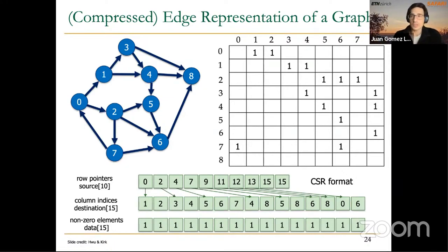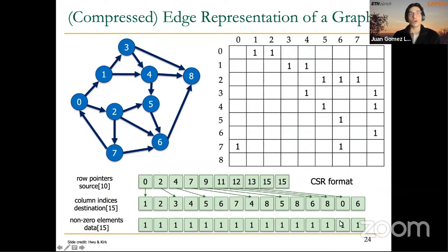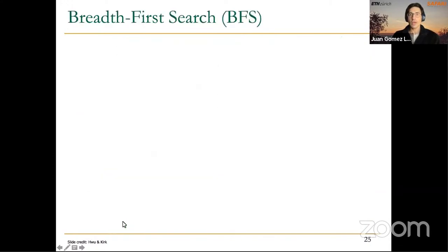But that's not the example we are covering today. In our simpler example, all non-zero elements are equal to 1, so we can ignore the data array. Now let's start talking about our algorithm: breadth-first search, or BFS.